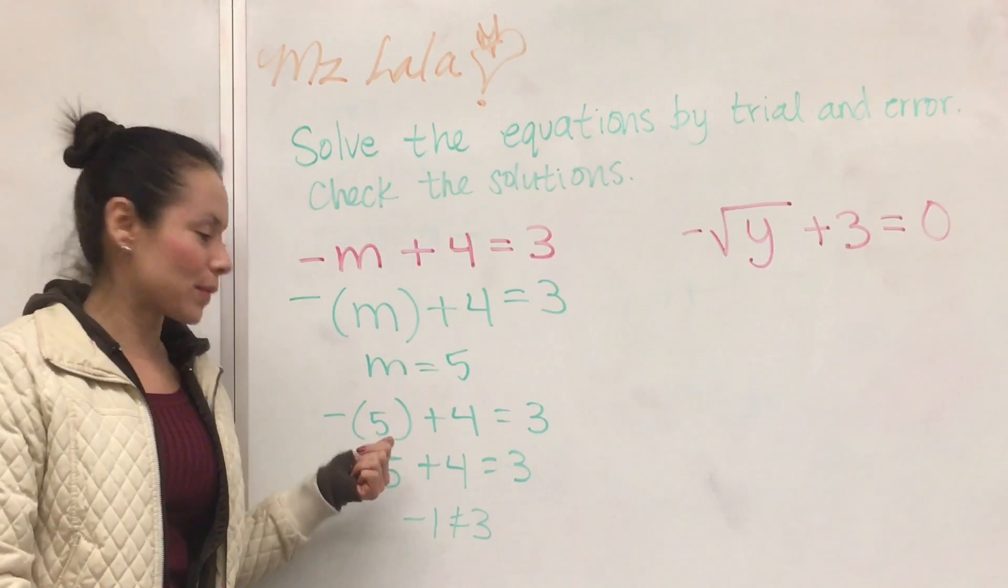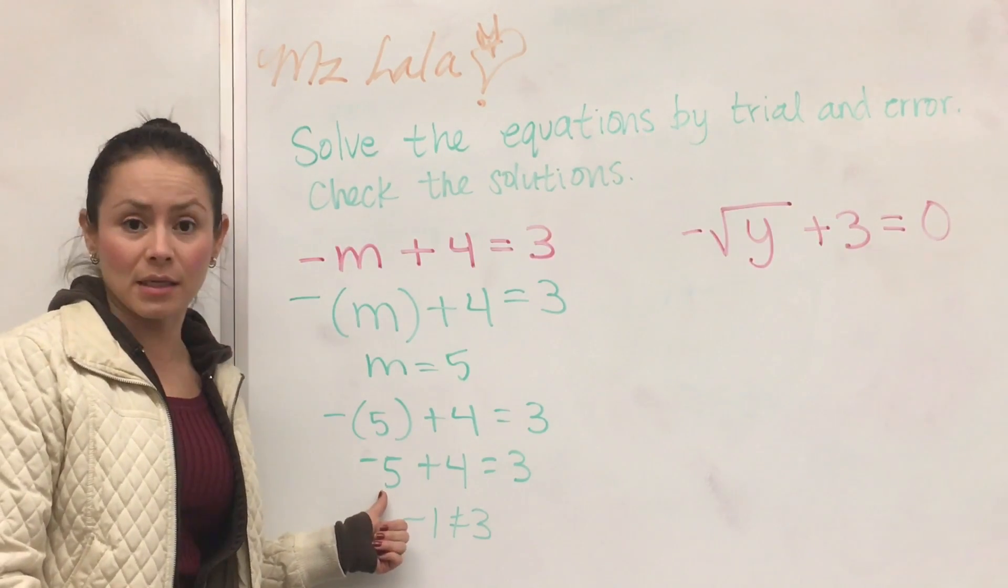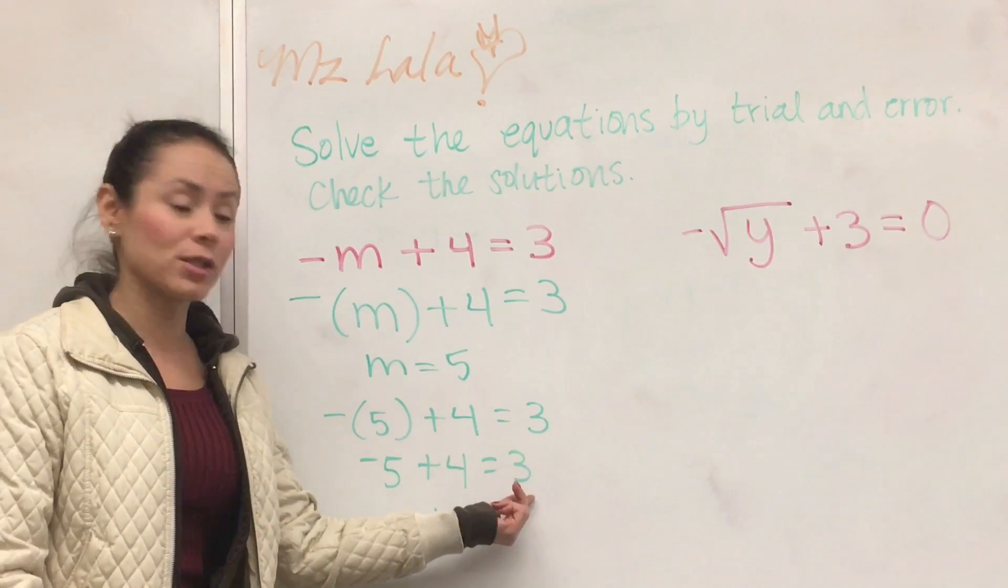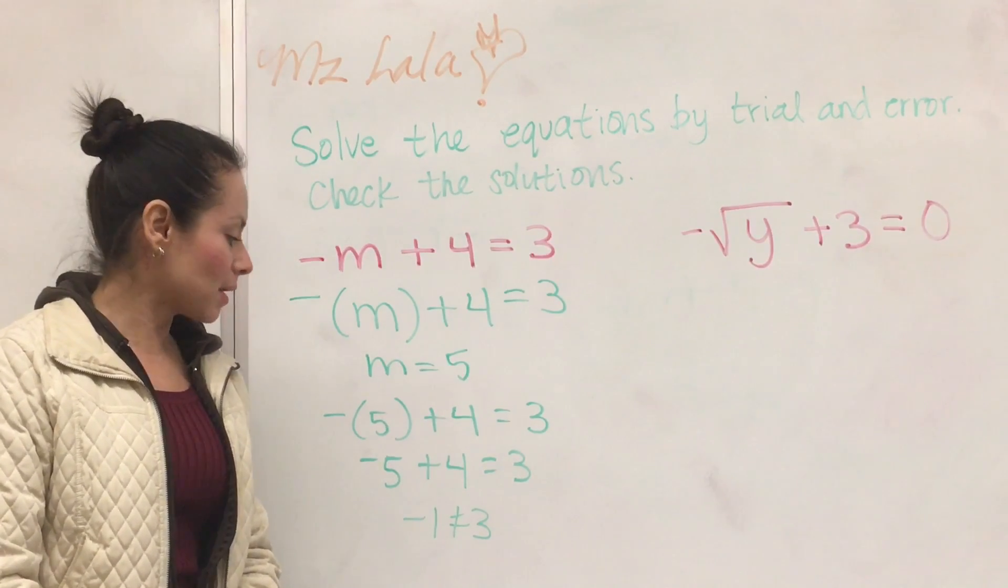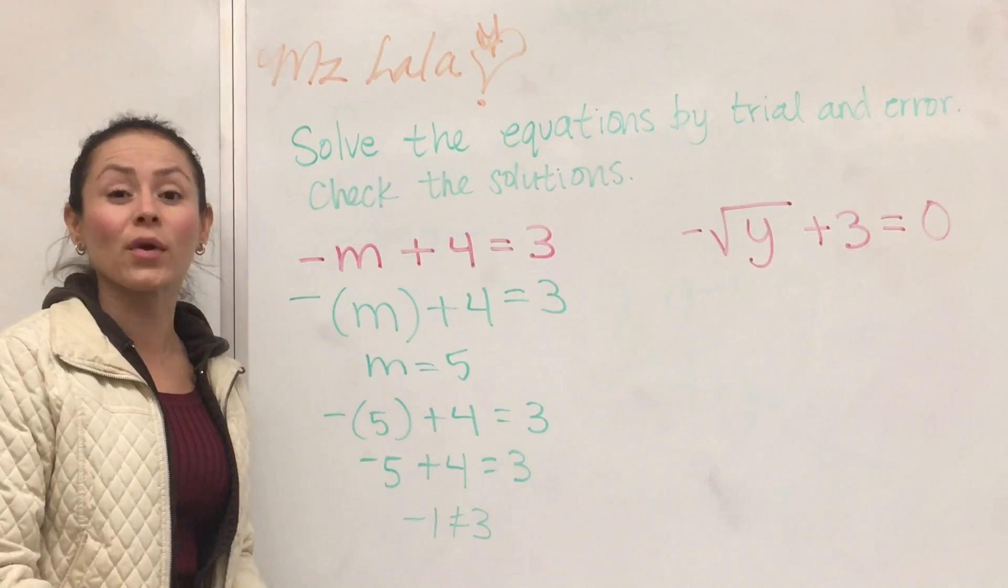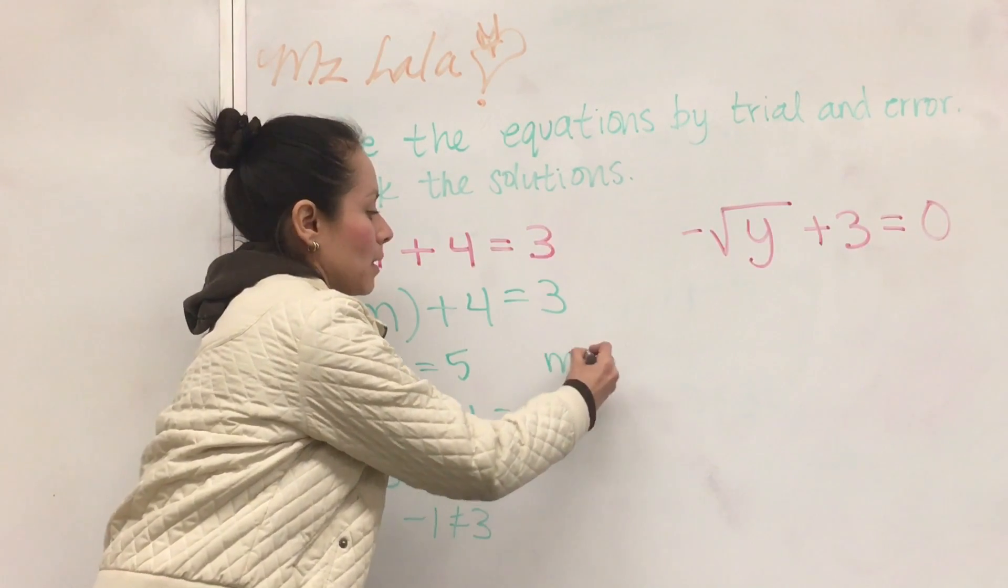So what would happen if we were to put in a negative number? Then this would become positive, but then that number would be too big. So it looks like m might have to be 1. So let's try. Can m equal 1?